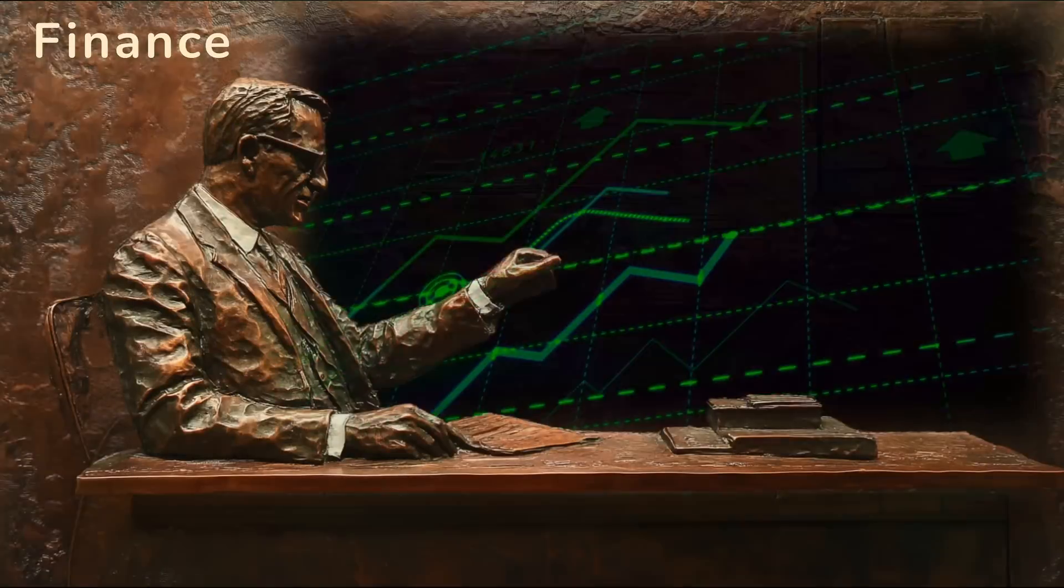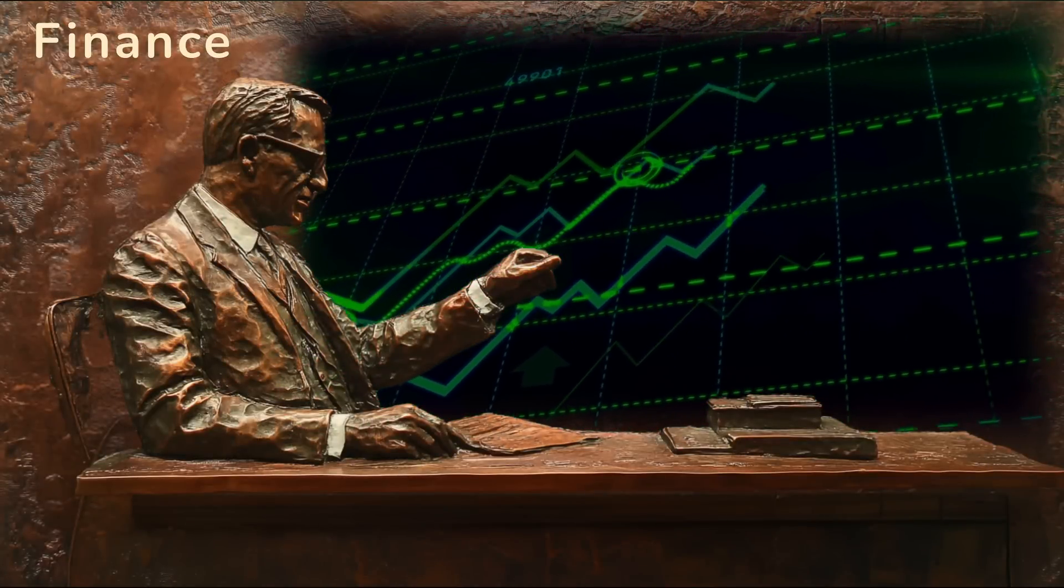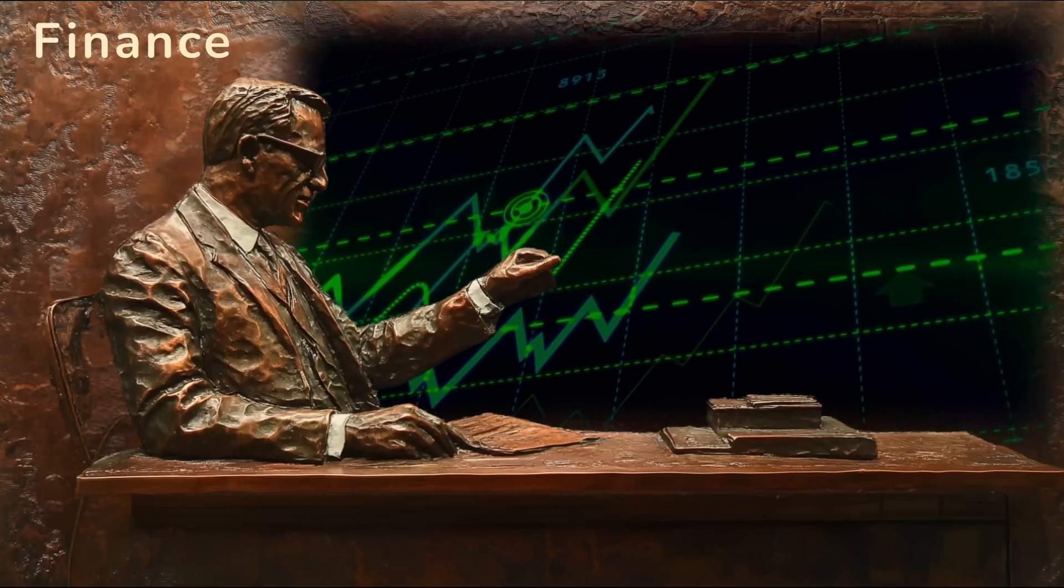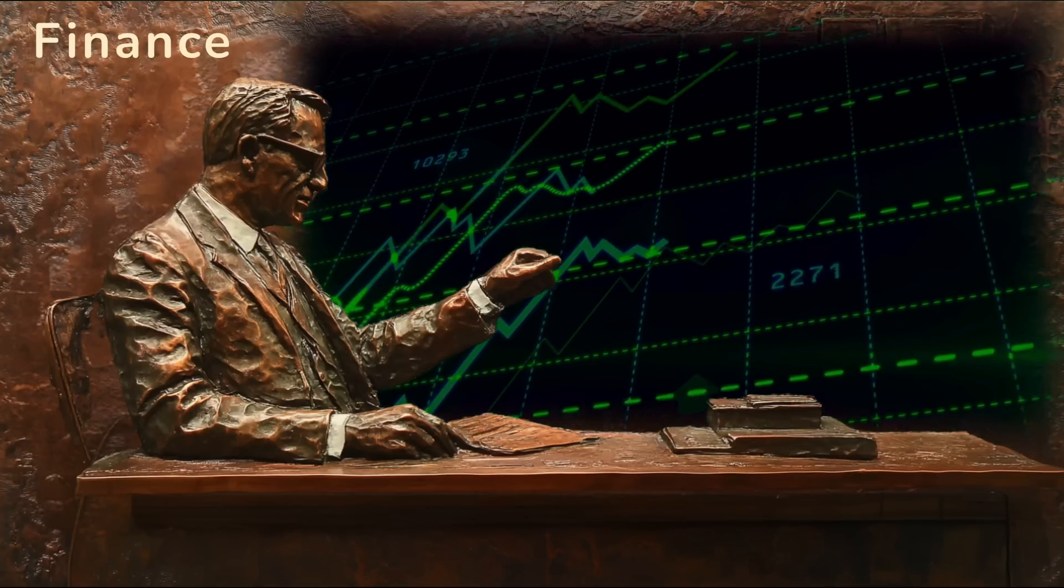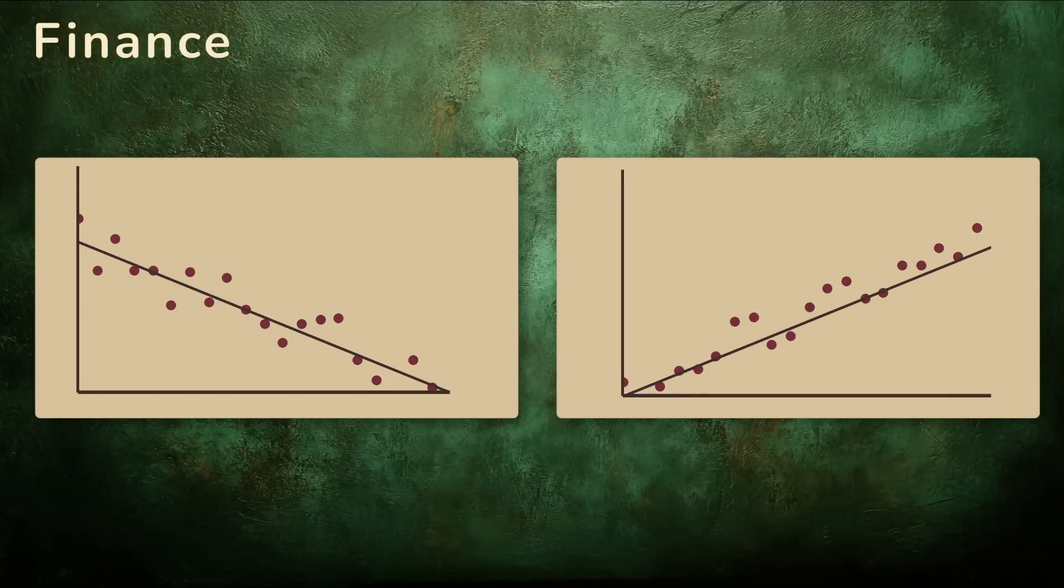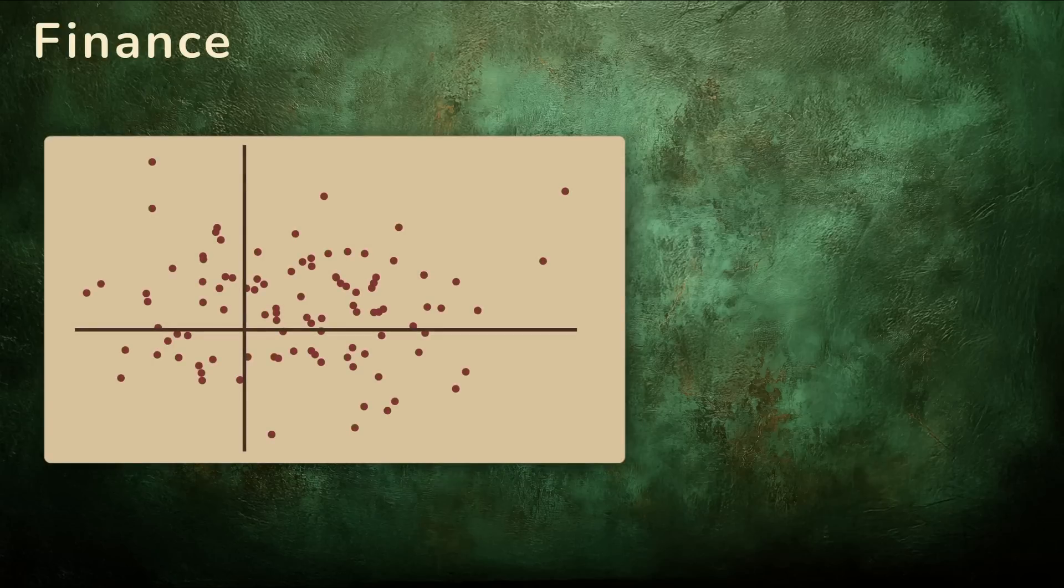In finance, covariance helps investors build smarter portfolios. If two assets tend to move together, then you'll likely gain or lose money in both assets at the same time. To reduce your risk, it's better to spread your money around. So if one asset does poorly, another may do well. It's even better if your assets are independent of each other. That's diversification, and covariance is how we measure it.